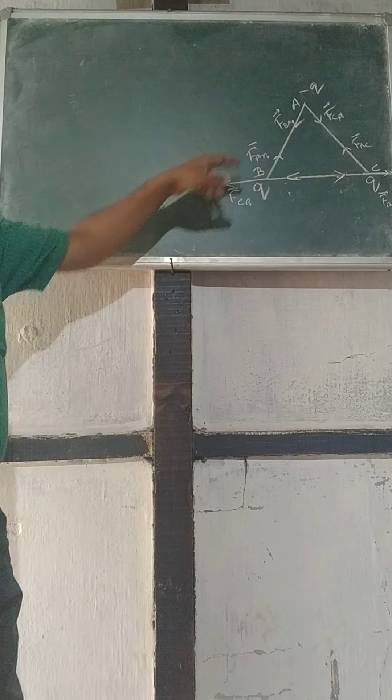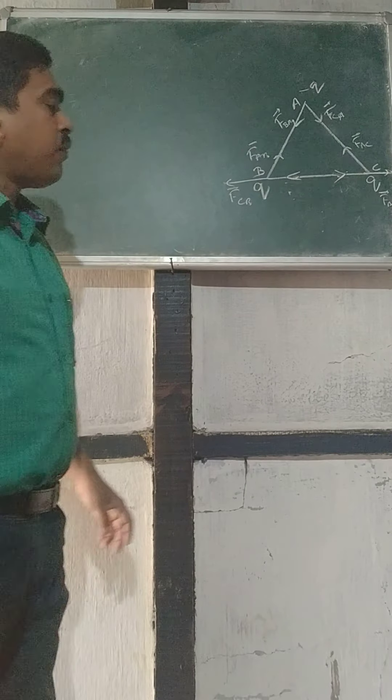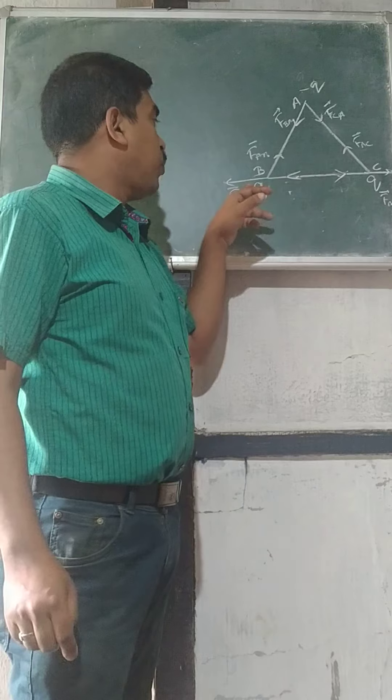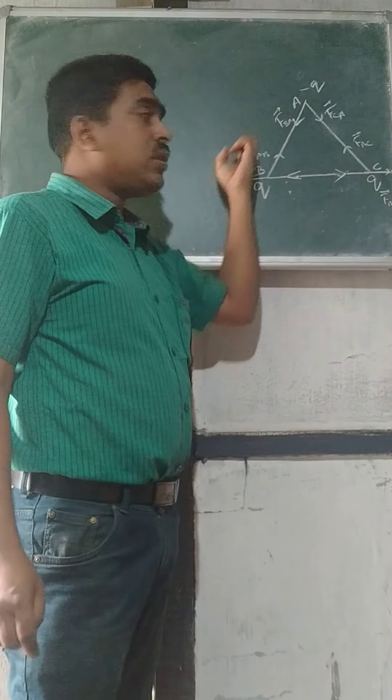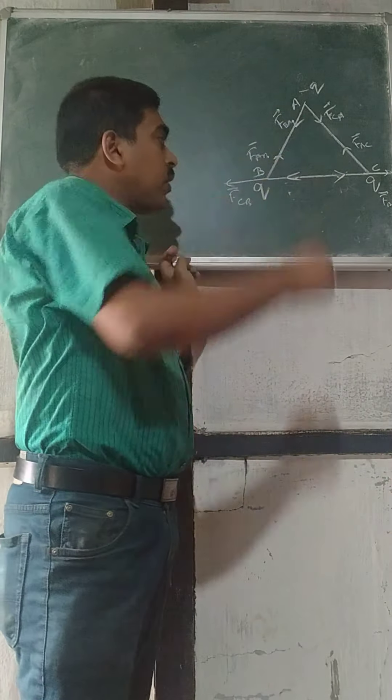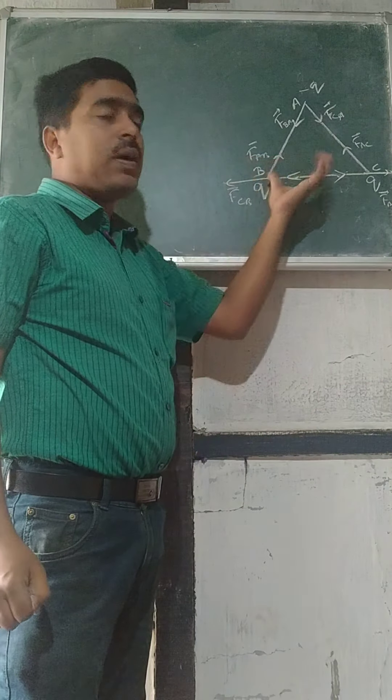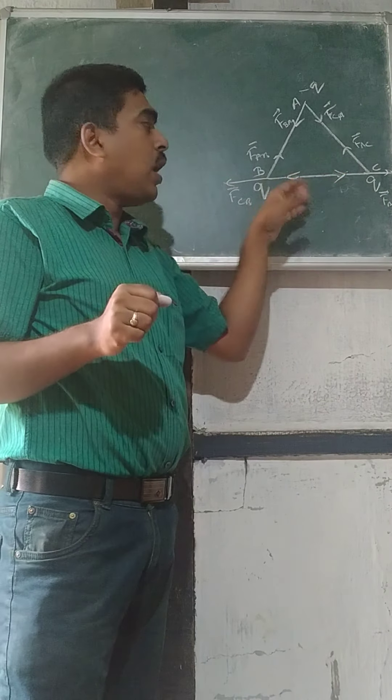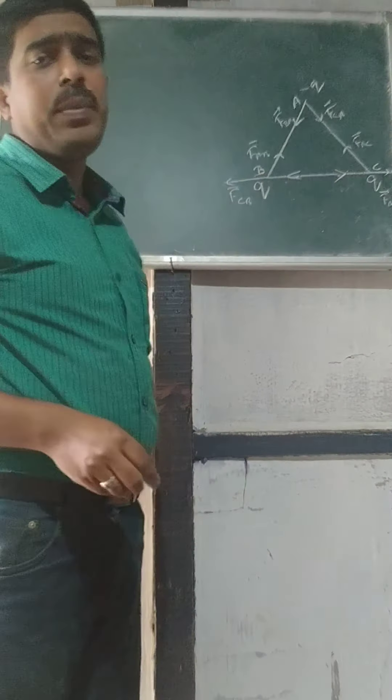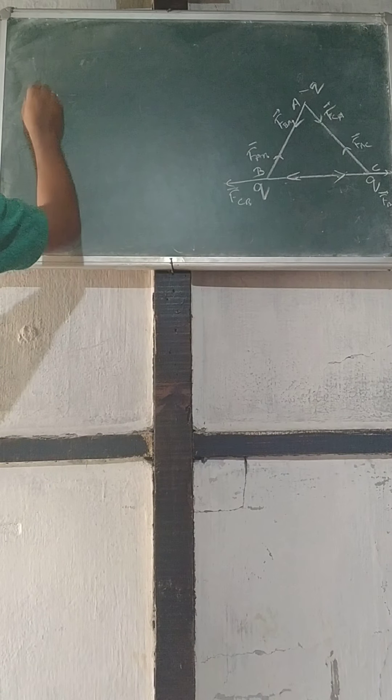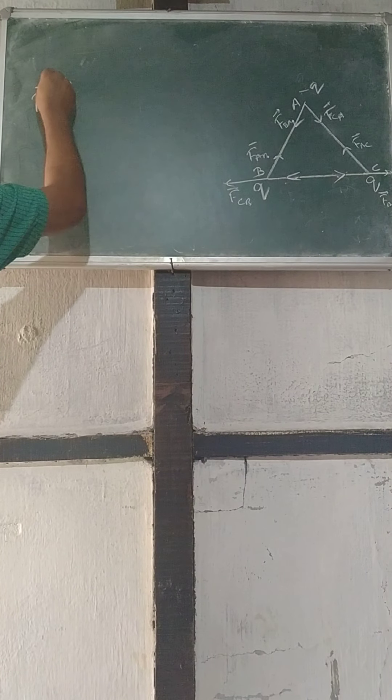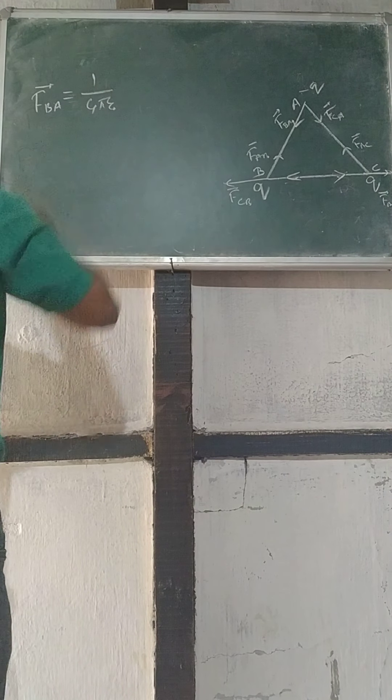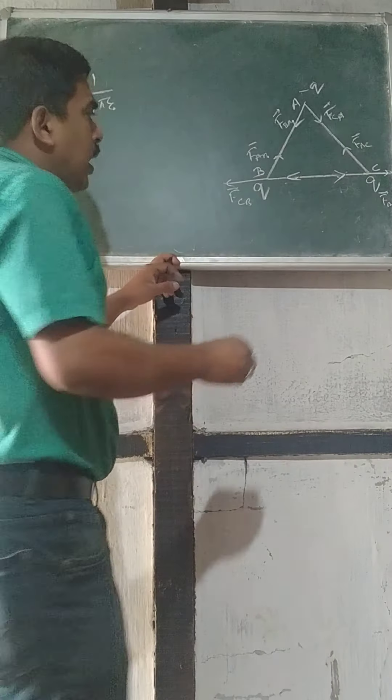So we have to calculate these individual forces. First, your FAB will be - positive and negative will attract each other. This will pull negative, will pull positive this side. But these two positive charges will repel. This positive repulsion is going on this charge. This force will go this side and this force will go this side. So this will be FBC will go this way. FBA will equal to 1 by 4 pi epsilon naught, and it is an equilateral triangle of side L.